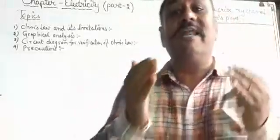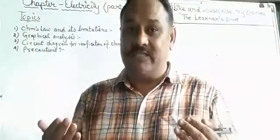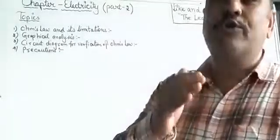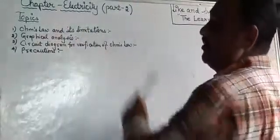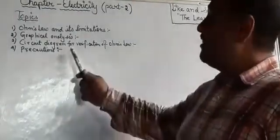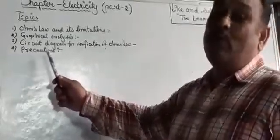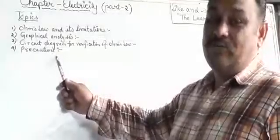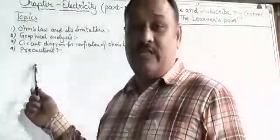Today we are going to continue the same chapter — Electricity. The topics we are going to discuss today are: Ohm's Law and its limitations, graphical analysis for Ohm's Law, the circuit diagram for verification of Ohm's Law, and precautions taken during the experimental analysis of Ohm's Law.